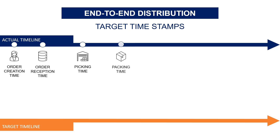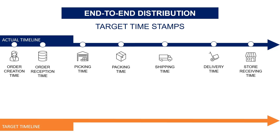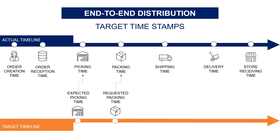To measure the performance and spot the failures, we can implement target timestamps. Based on target lead time per process, we can calculate the estimated time each process should be ending. Expected picking time: considering order creation and transmission, we can set up a target lead time to estimate when the warehouse is supposed to start picking. Requested packing time can be a request from the planning team — sometimes packing time is linked with an invoicing process, so it's reasonable to ask for fixed timing for completing the process.